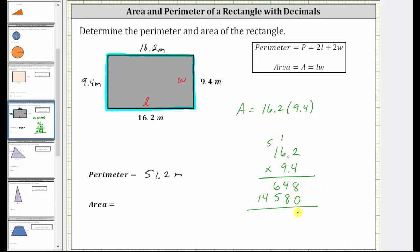And now we add. 8. 4 plus 8 is 12. Record the 2 and perform an exchange. 1 plus 6 plus 5 is 12. Record the 2 and perform an exchange. 1 plus 4 is 5 and we have a 1. But again, the product must contain two decimal places, and therefore the product is 152.28. And therefore the area is 152.28 square meters.